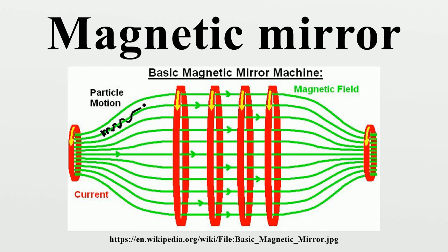Magnetic mirrors also occur in nature. Electrons and ions in the magnetosphere, for example, will bounce back and forth between the stronger fields at the poles, leading to the Van Allen radiation belts.